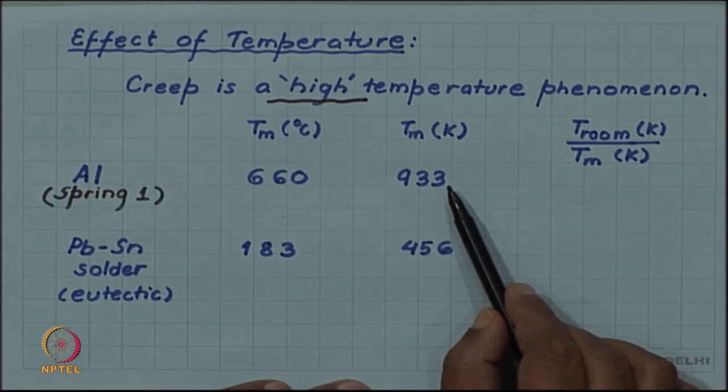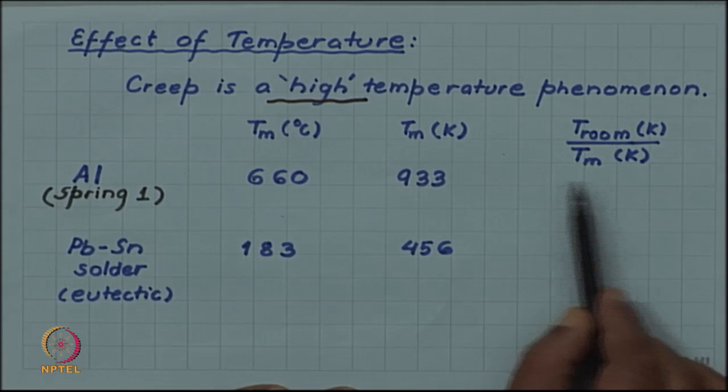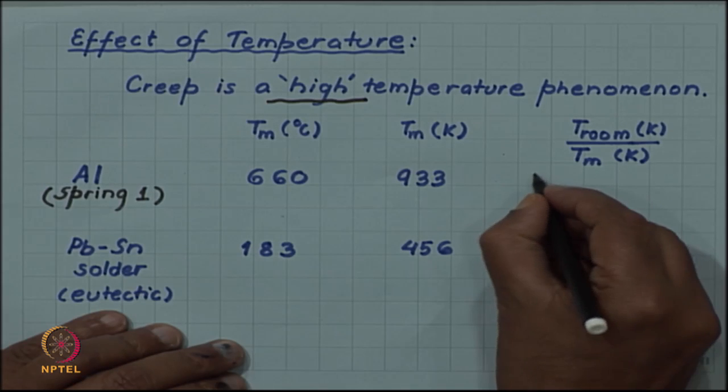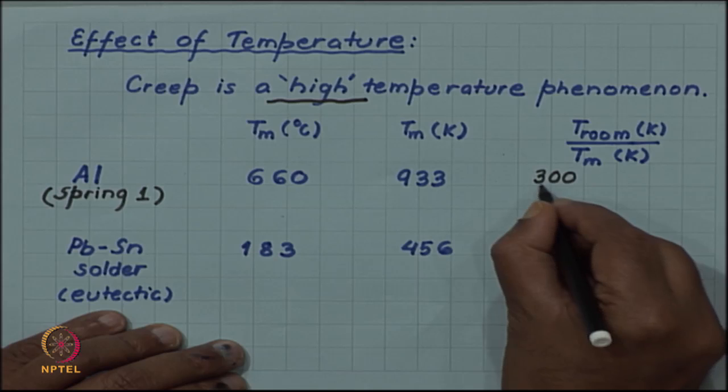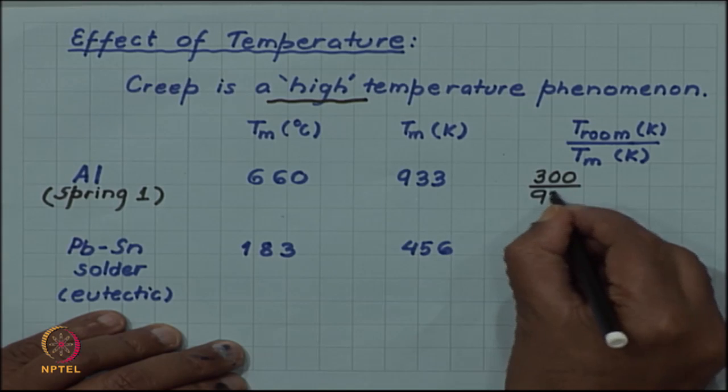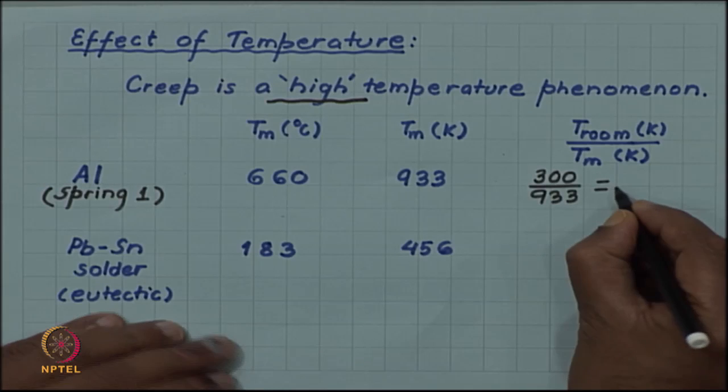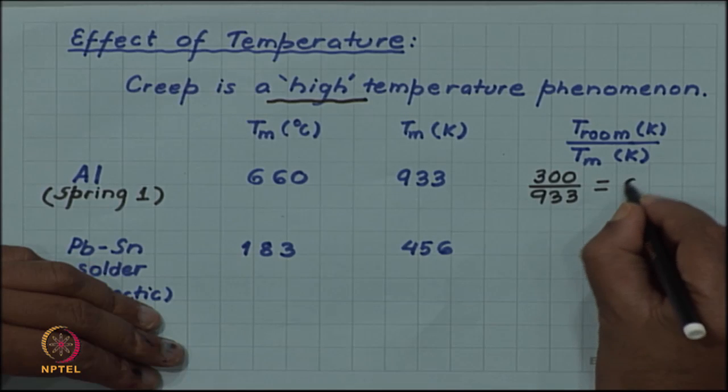And if we take the ratio of room temperature, which let us take as 300 Kelvin, you get a ratio of about 0.32.